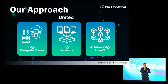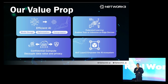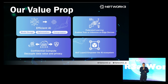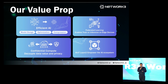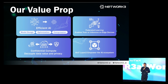Our approach is we unite all the edge compute power and edge data, and deposit that knowledge to a Layer 2. Our value proposition is we use efficient AI to optimize and compress models, federated learning to enable training and inference on edge devices, and confidential compute to decouple data value from privacy. We also built an AIoT-specific Layer 2 to empower the entire AI ecosystem.